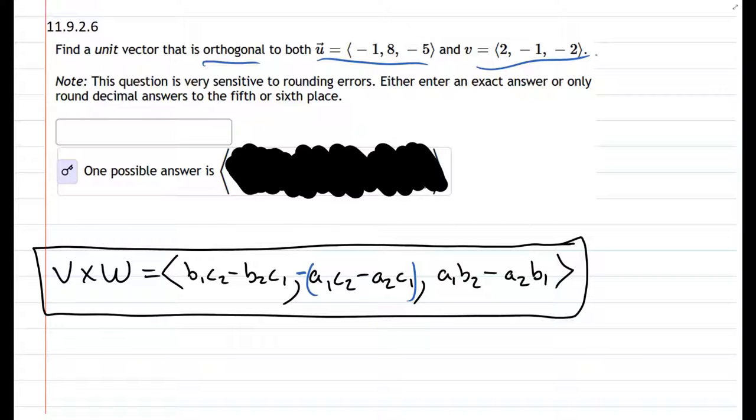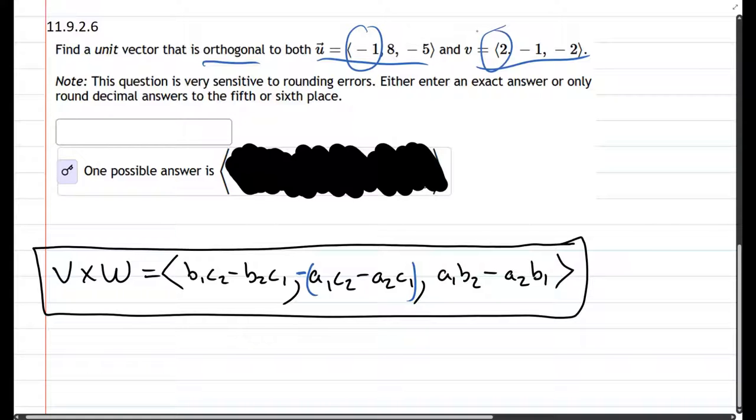So these two vectors are definitely not multiples of each other. You can check that just looking at the first coordinates - you'd have to multiply by negative 2 to go from the first vector's first coordinate to the second vector's x coordinate, but that definitely does not work when you look at the y coordinates. If you multiply by negative 2, 8 times negative 2 is not negative 1. So they're definitely not multiples of each other.